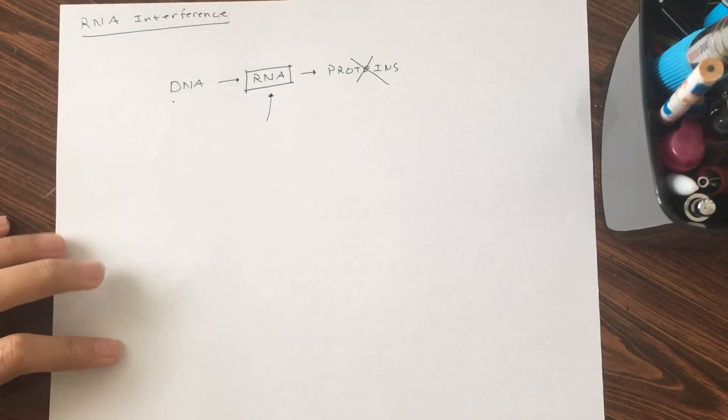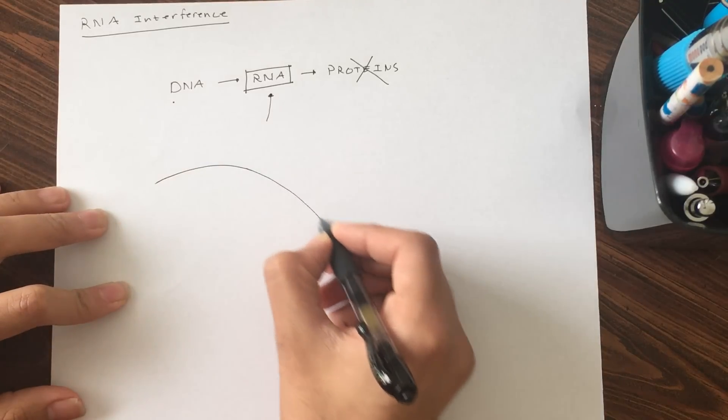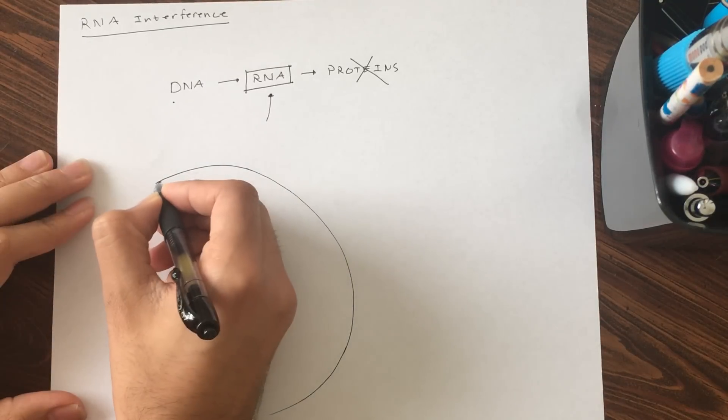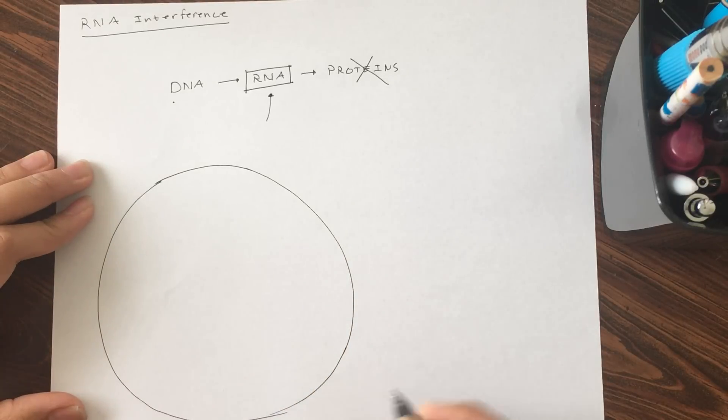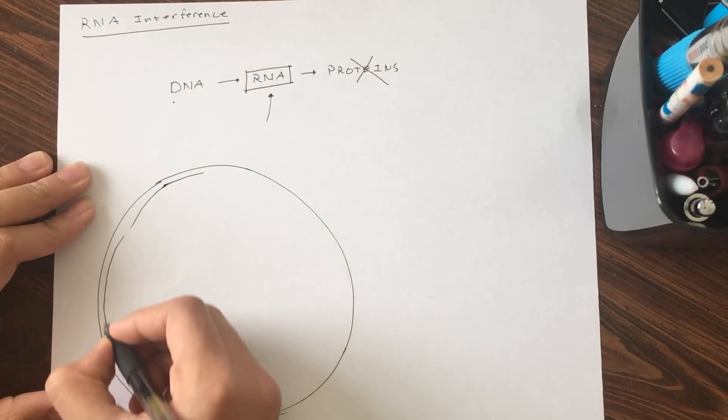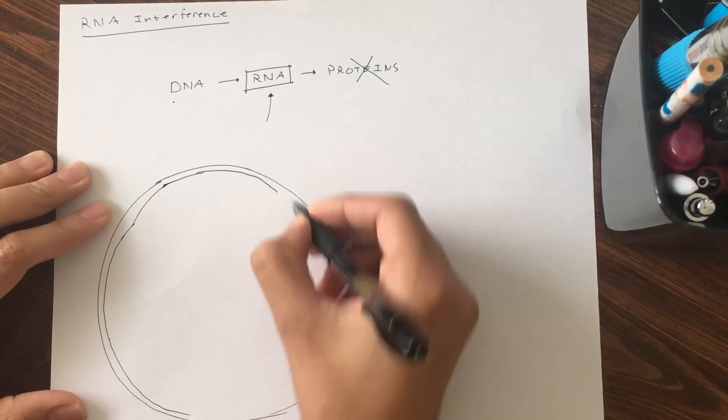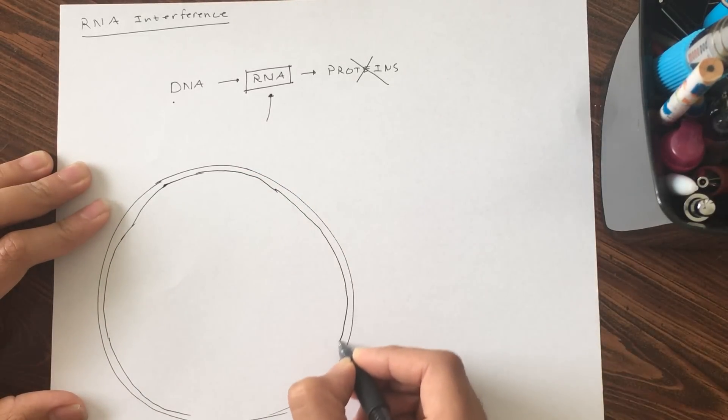So let's get to how it actually does this. Suppose you have a cell, a big cell. This is the cell membrane. So this is just the mechanism on how this occurs.